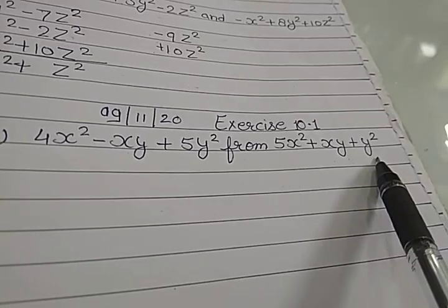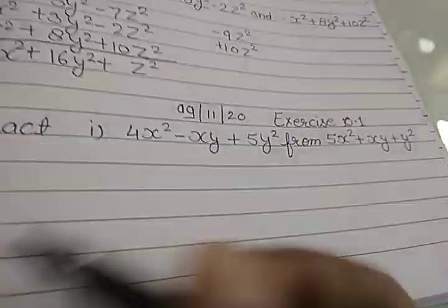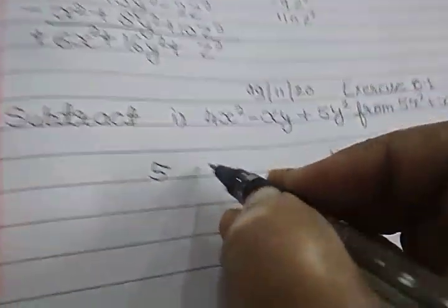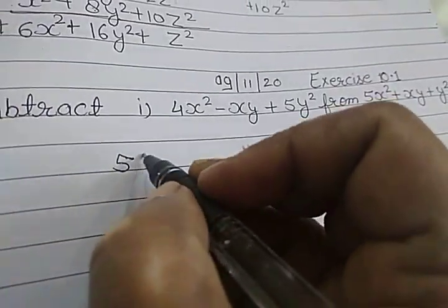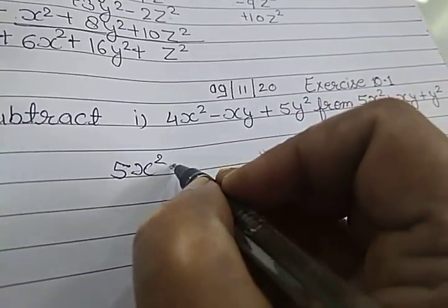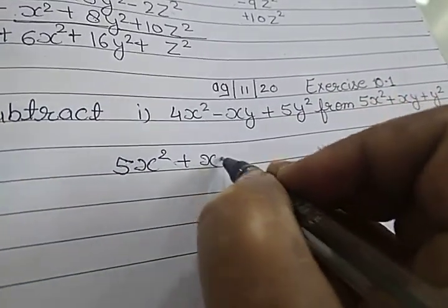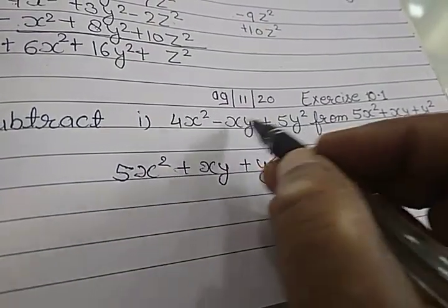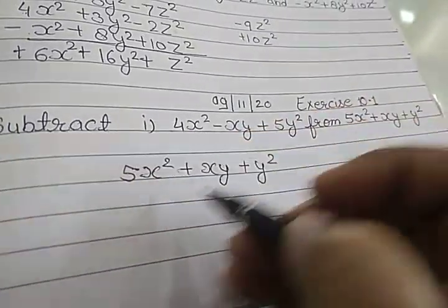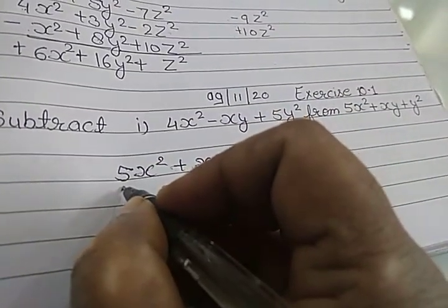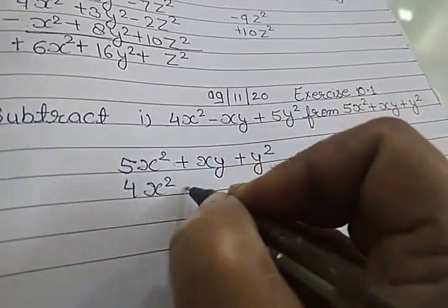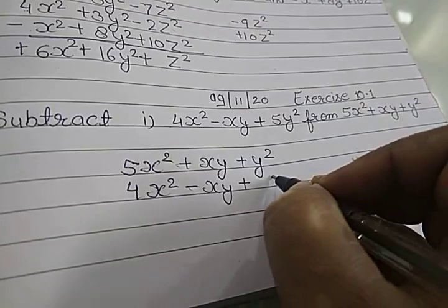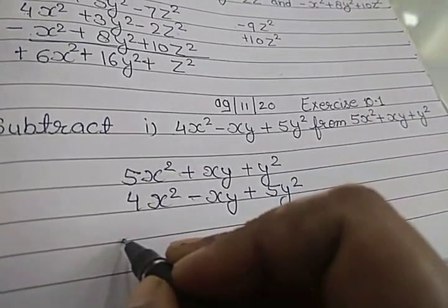So we can write here 5x² + xy + y², and before 'from', this number is given. This term we always write second, so 4x² - xy + 5y². Now in subtraction, we are changing the sign of the second terms.